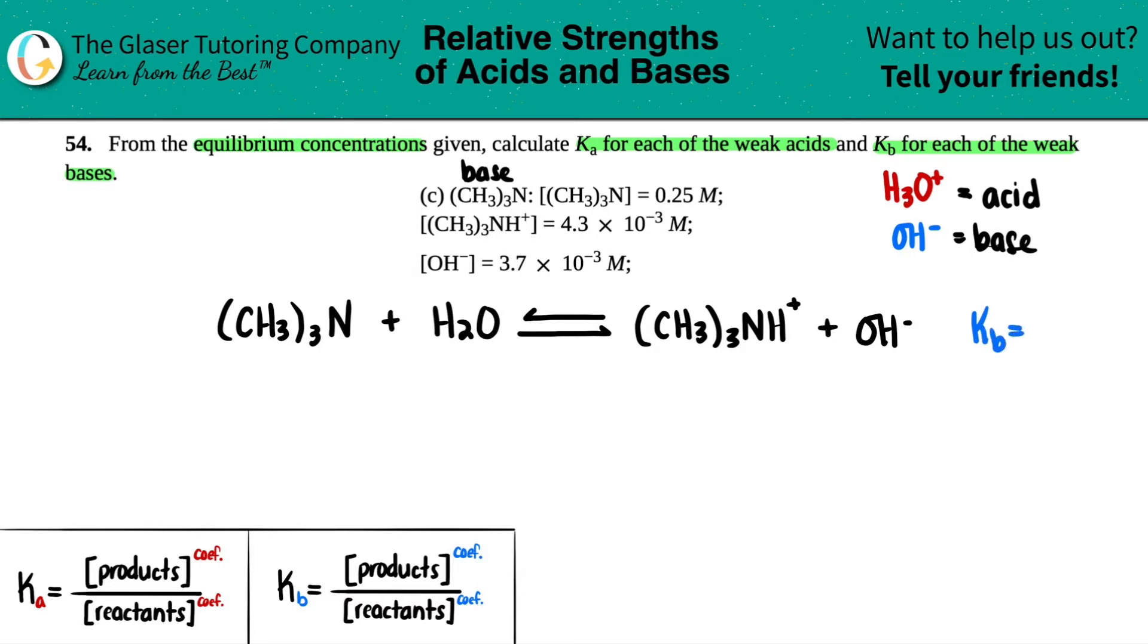We just stated that we're searching for Kb because we formed hydroxide in solution. Let's write out what we got. They told us we had a (CH3)3N concentration of 0.25 molarity, a (CH3)3NH+ concentration of 4.3 times 10 to the negative third molarity, and the hydroxide is 3.7 times 10 to the negative third molarity. What about water? Well, remember water is acting as the solvent - it's a liquid. For any K equation, liquids are not allowed, so no calculations for water.